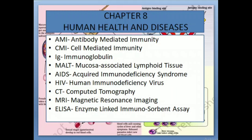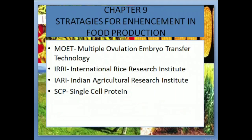MALT: Mucosa Associated Lymphoid Tissue. AIDS: Acquired Immunodeficiency Syndrome. HIV: Human Immunodeficiency Virus. CT: Computed Tomography. MRI: Magnetic Resonance Imaging. ELISA: Enzyme Linked Immunosorbent Assay. Chapter 9.